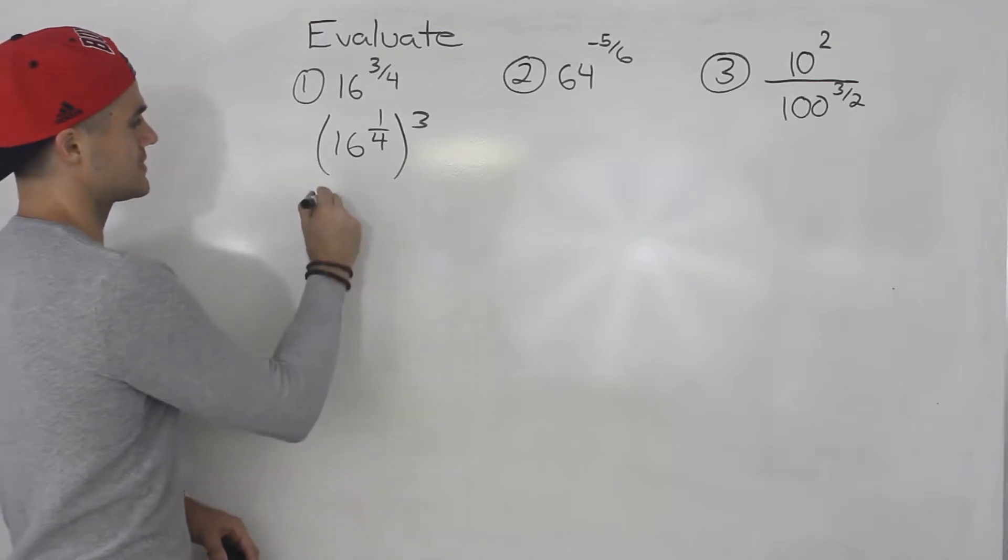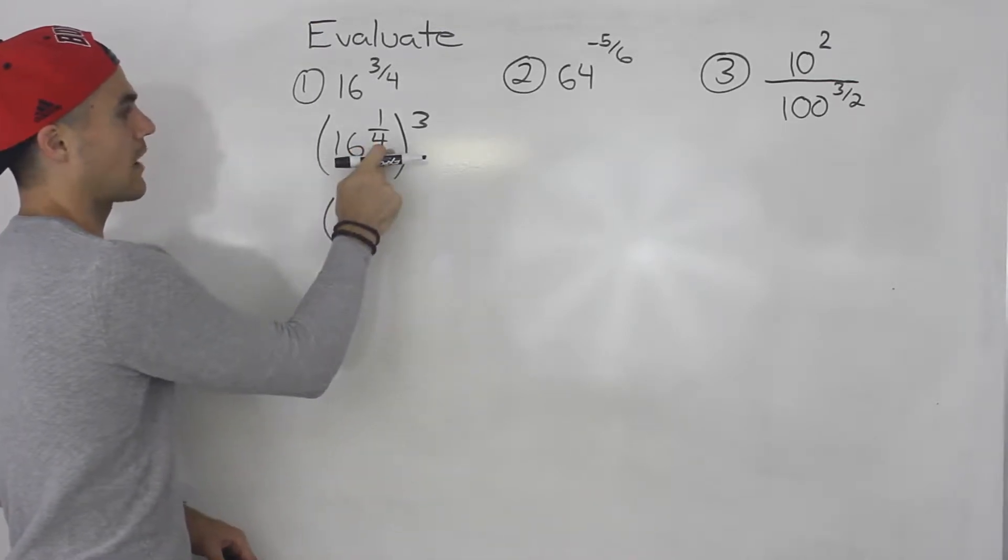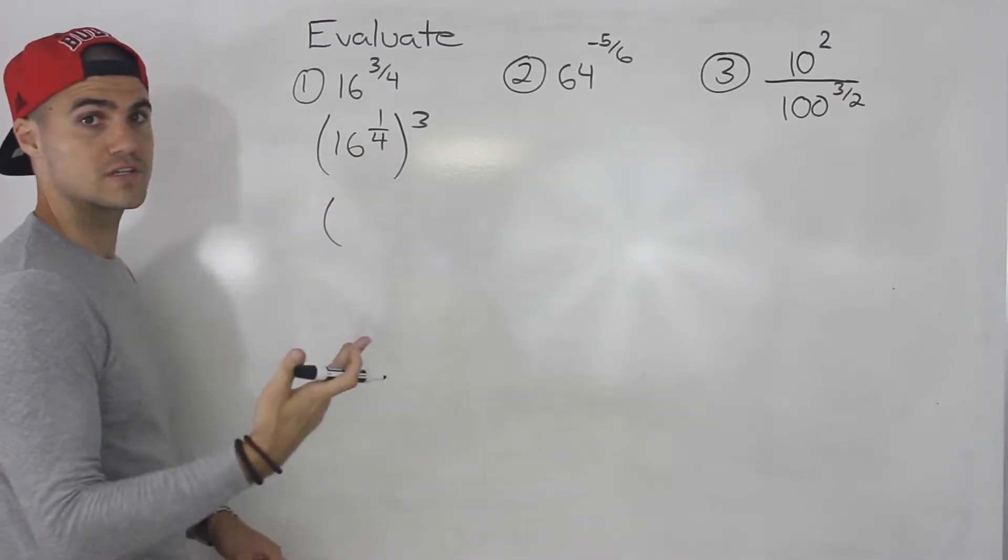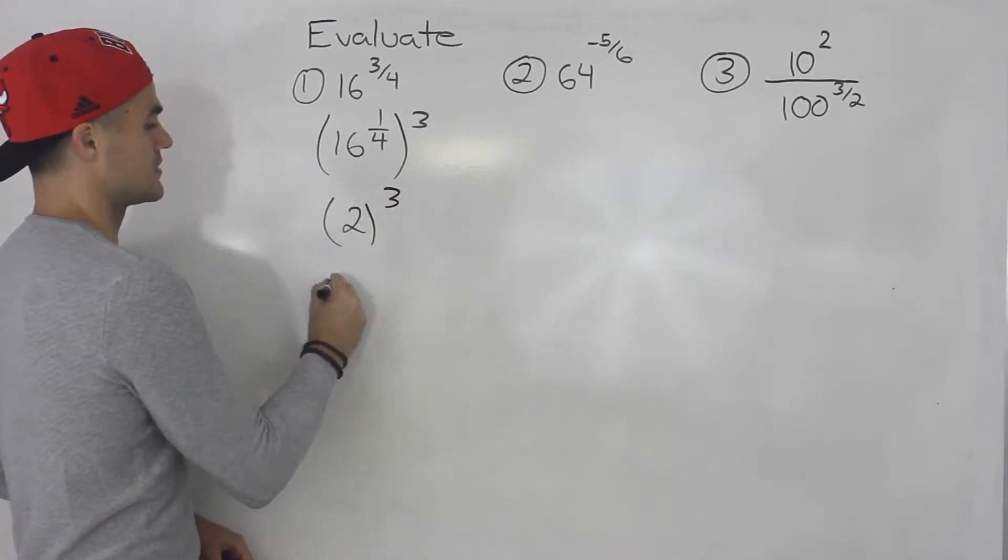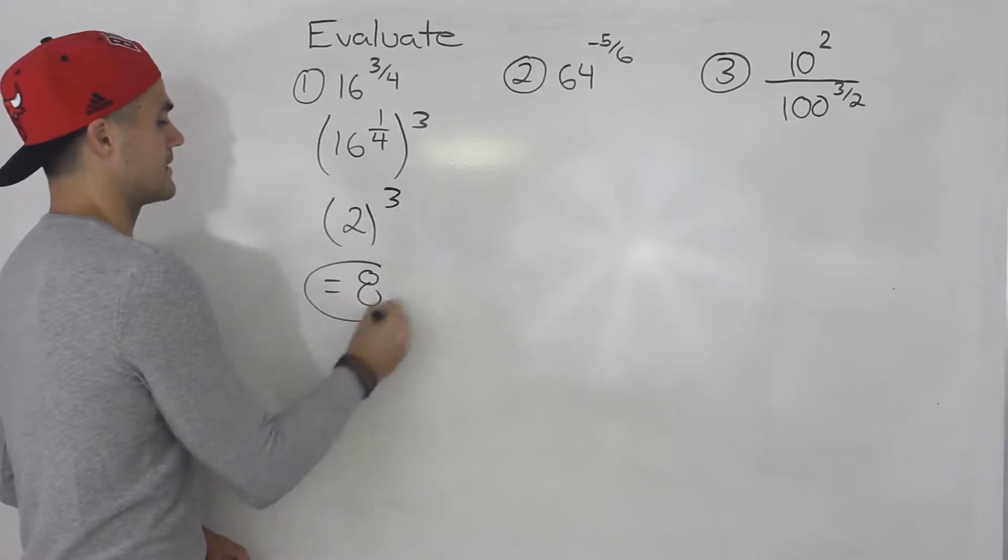From here it's easy to evaluate because 16 to the power of 1 over 4, that's the 4th root of 16, which is just 2. And then we have 2 to the power of 3, so that ends up being 8.